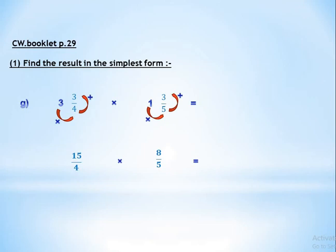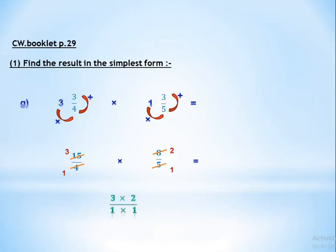Let's simplify: we have 4 and 8 — both in the 4 times table — and 5 and 15 — both in the 5 times table. Dividing 5 and 15 by 5 gives 1 and 3. Dividing 4 and 8 by 4 gives 1 and 2. Now multiply numerator by numerator and denominator by denominator: 3 times 2 equals 6, and 1 times 1 equals 1. The answer is 6 over 1, which equals 6.